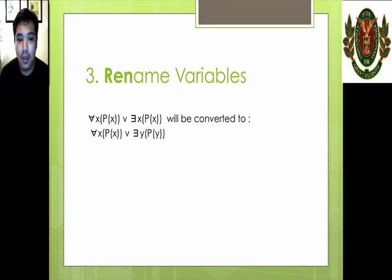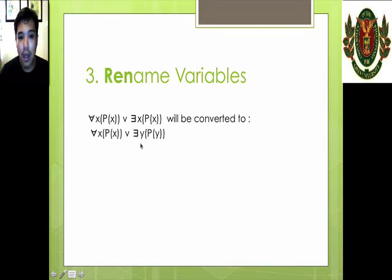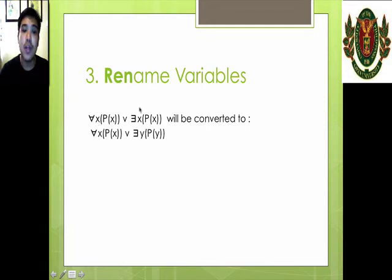The next step is REN — rename variables. If we have for all X, P of X and for some X, P of X, we see the same variable X used by two different quantifiers. If we encounter this, we have to change the existential one into another variable: for some Y, P of Y. We will rarely encounter this in examples, but just make sure that when you notice two different quantifiers with the same variable, you change the second one to another variable.